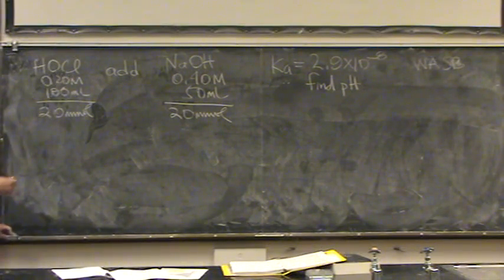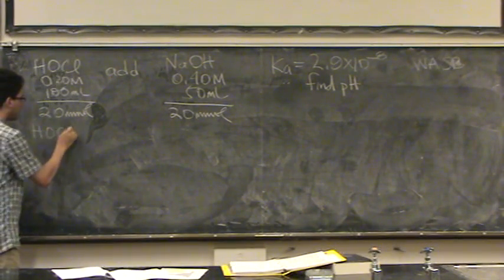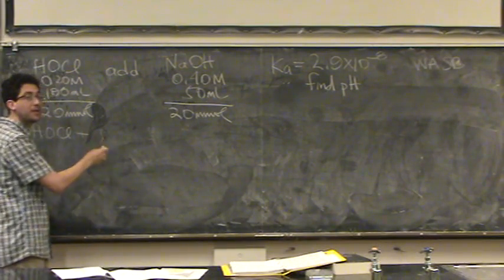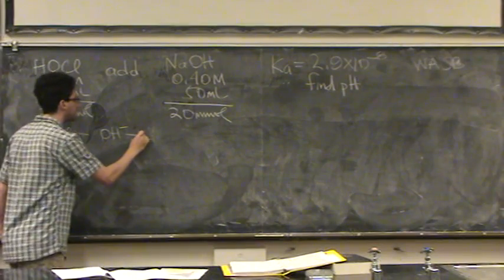And so, let me kind of write out the reaction first, just so you can see how I would do the ice table, and then we'll get to the ice table second. So, I've got this strong weak acid. I'm adding the strong base. Again, you could write sodium hydroxide or just hydroxide, whatever. I'll just write hydroxide.